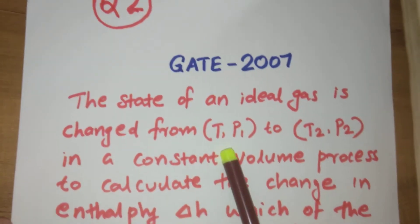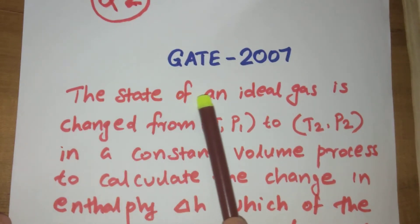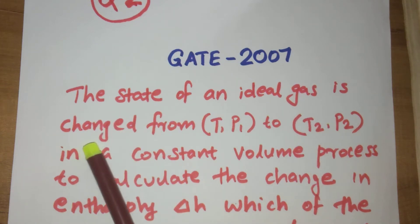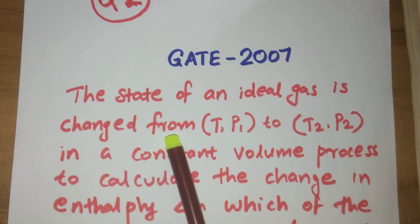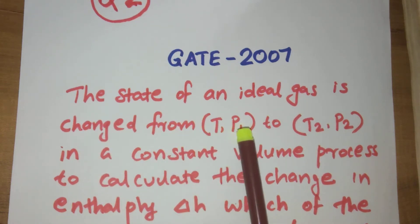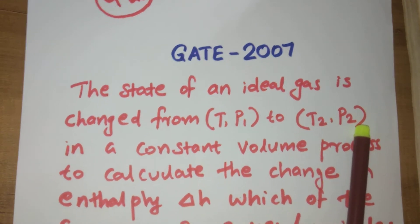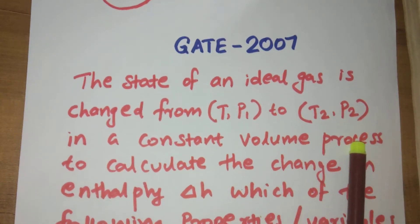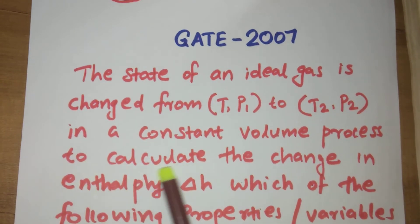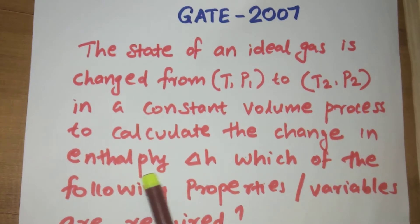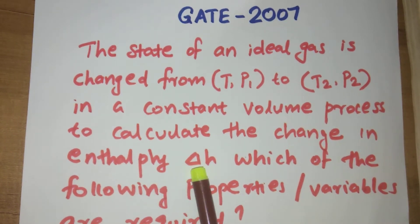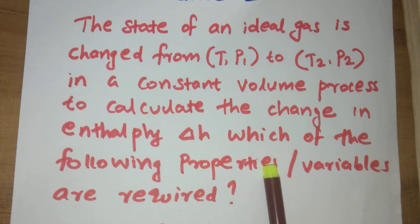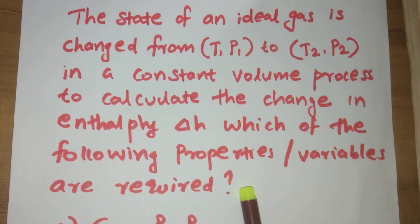Look at the question. The state of an ideal gas is changed from T1, P1 to T2, P2 in a constant volume process. To calculate the change in enthalpy, delta H, which of the following properties or variables are required?